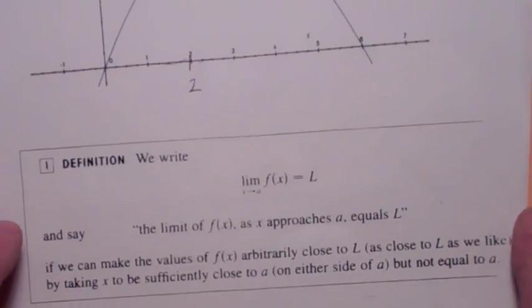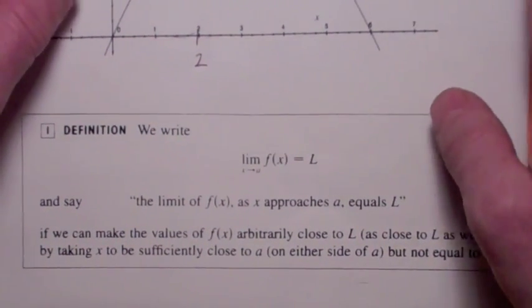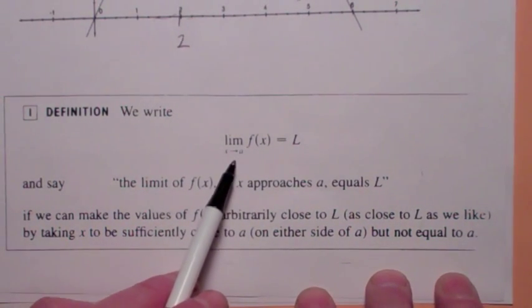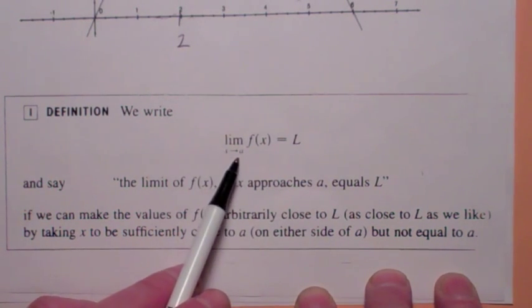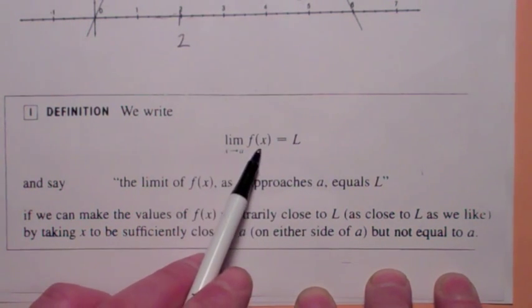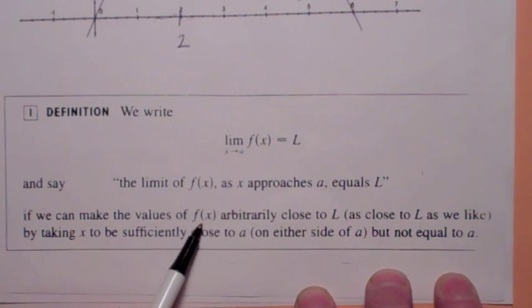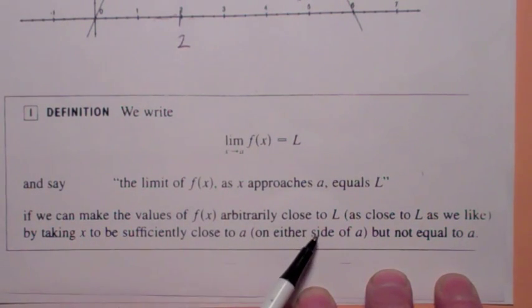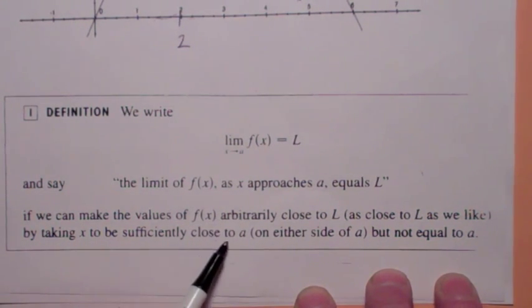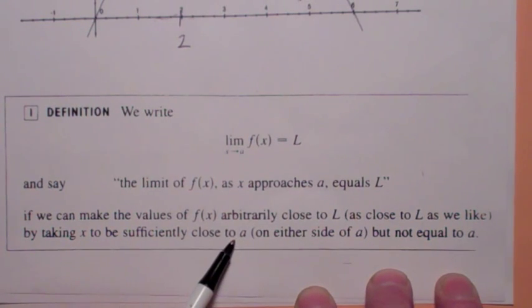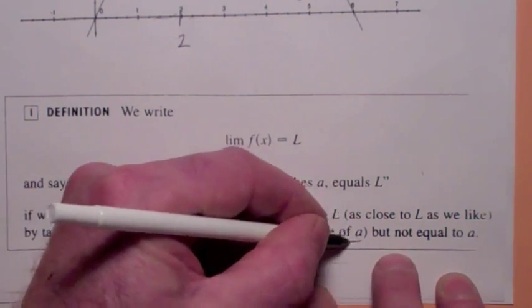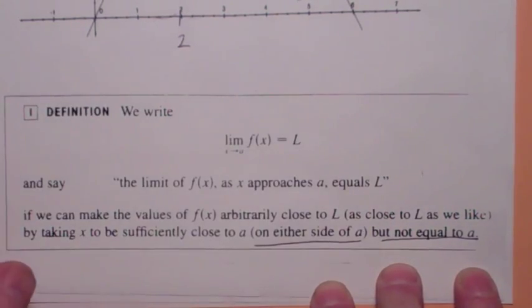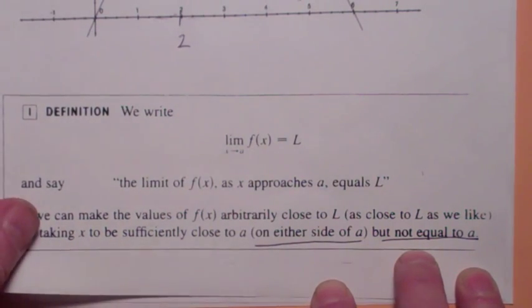Now the definition that we're going to be working with here, definition of a limit, the limit as x goes to a, this is in section 2.2, the limit as x goes to a of f of x equals L means we can actually make the y values arbitrarily close to L. In this case, the y values are arbitrarily close to 8 by taking x sufficiently close to a, in this case 2. Now the key to this definition is you have to be able to approach a from both sides and we don't care what happens when x equals a. In this case, we don't care what happens when x equals 2.